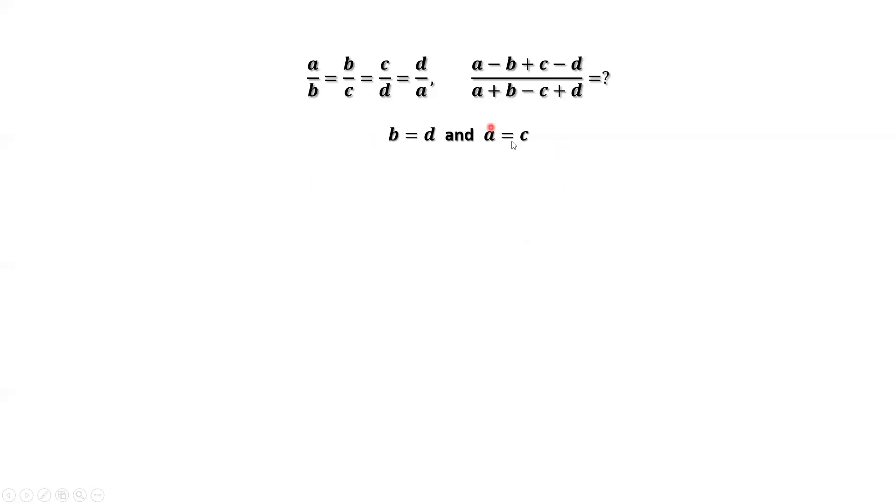We can use this result to simplify the given question. Replace C by A and D by B, then we have A minus B plus A minus B over A plus B minus A plus B. This simplifies to 2(A minus B) over 2B, which equals A minus B over B.